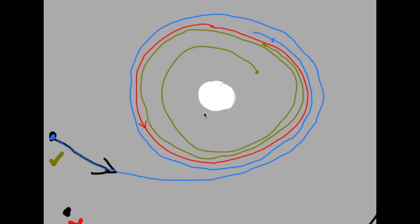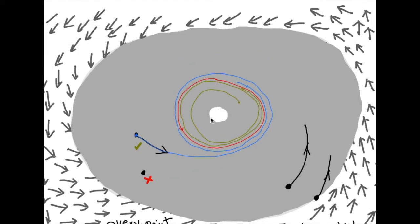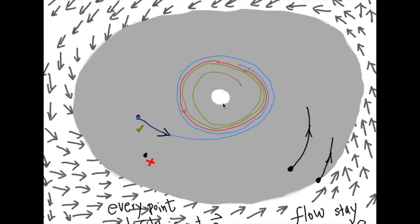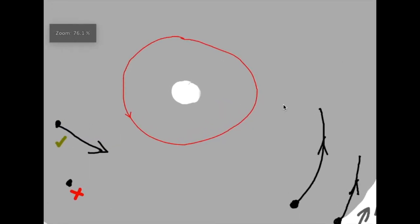There can be more than one cycle. As for why there is a hole in the middle: we assumed there is no equilibrium point in M, but there is another theorem that says if you have a cycle, you will definitely have an equilibrium point inside the cycle. That's why we draw a hole and expect the equilibrium point to lie inside the hole, outside the region M.